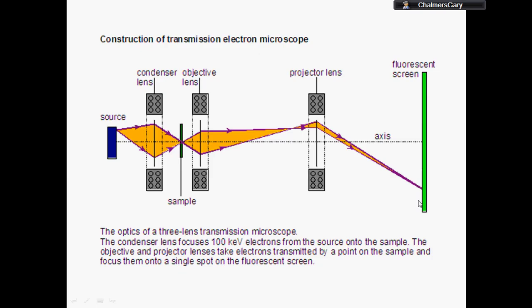The fluorescent screen is very similar to the screen on the old cathode ray tube televisions. It's a similar sort of thing. Electrons hit it and their kinetic energy is turned into light.